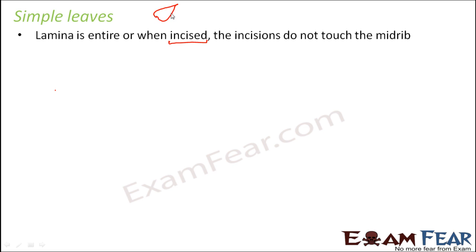If this is the midrib and this is the lamina, it may be incised — something like this — but these incisions do not touch the midrib. The incision goes up to a point but does not reach the midrib. These types of leaves are called simple leaves. If the incisions were to touch the midrib, we will see what happens when we talk about compound leaves.